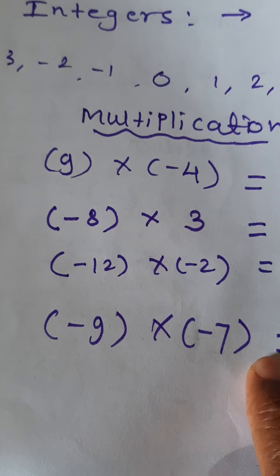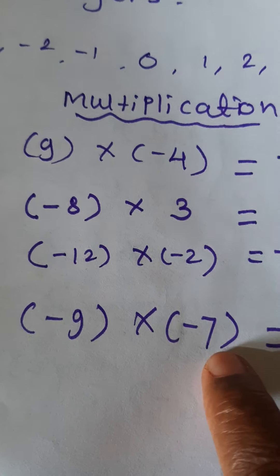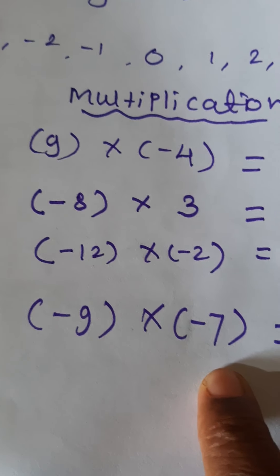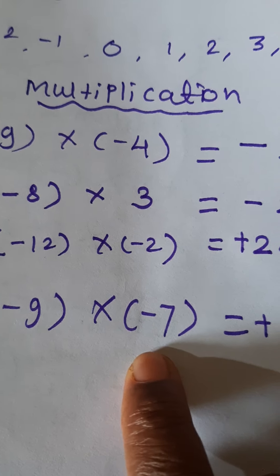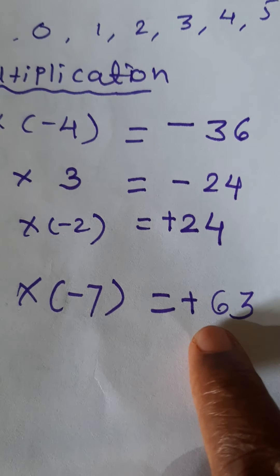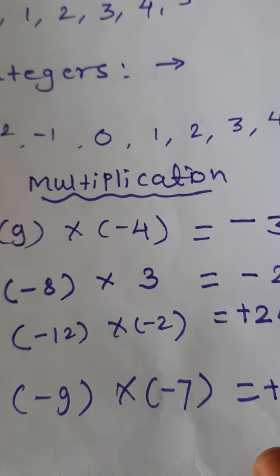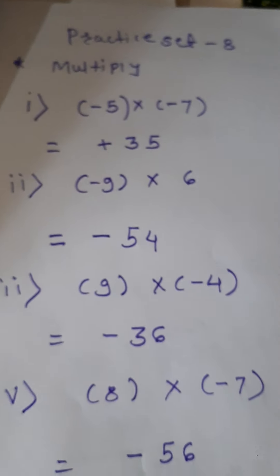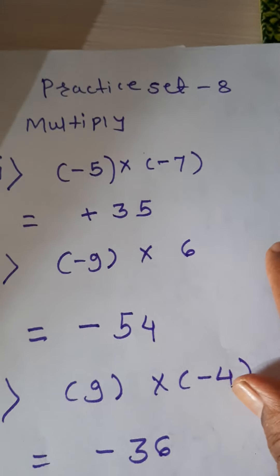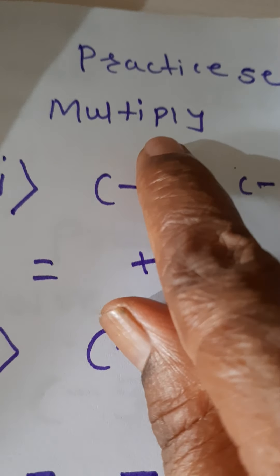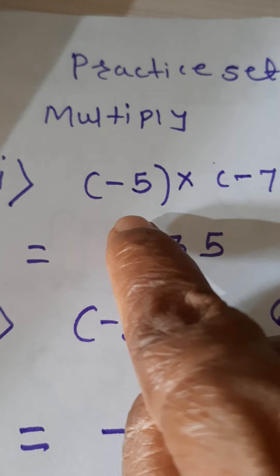If you don't write the positive sign it is also correct, because whenever a sign is not written the number is positive. You can write just 24 or positive 24. Then look at the next example: negative 9 into negative 7. Minus into minus is plus — 9 × 7 = 63. As both numbers have a negative sign, the answer is positive 63.